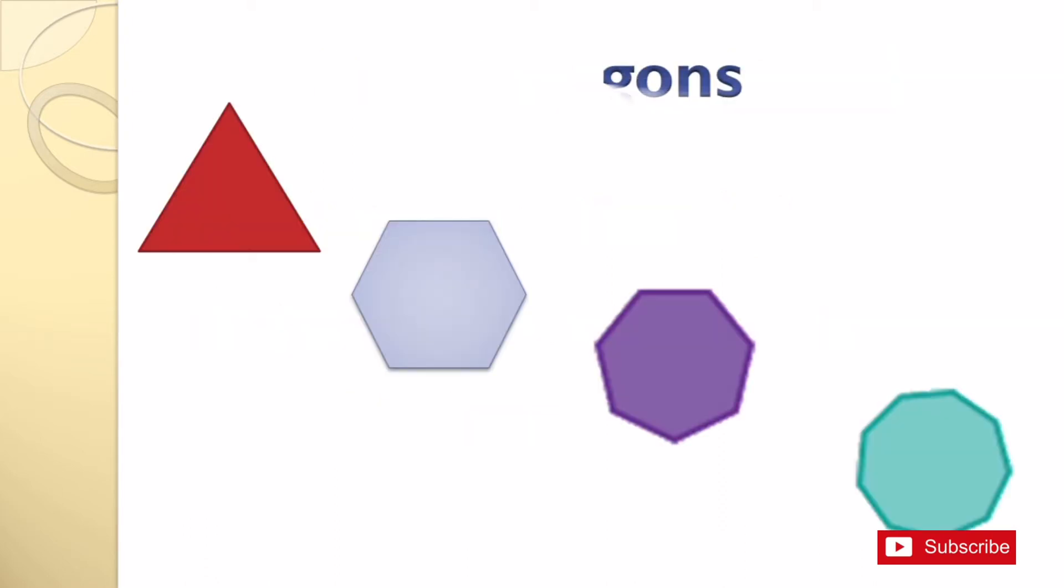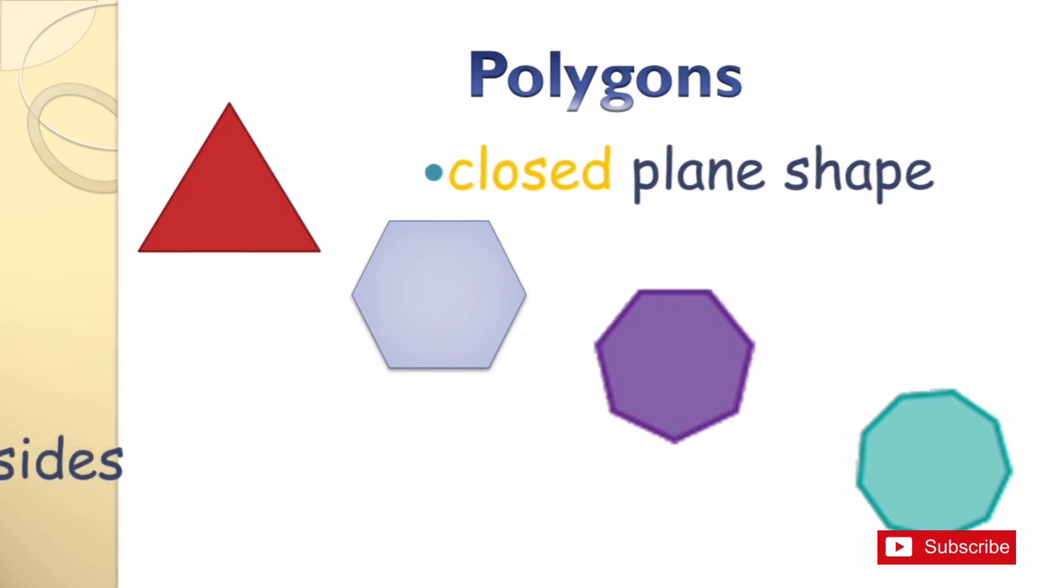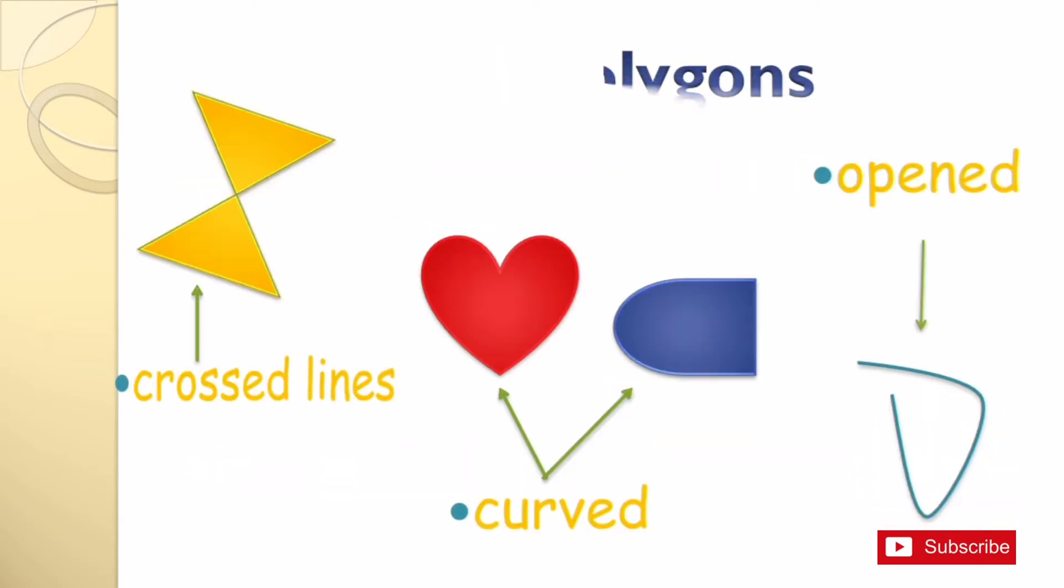These shapes are examples of polygons. They are closed plane shapes and they have straight sides. These shapes are not polygons. They have crossed lines, curved edges, and are open.